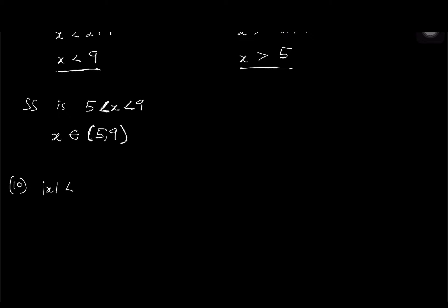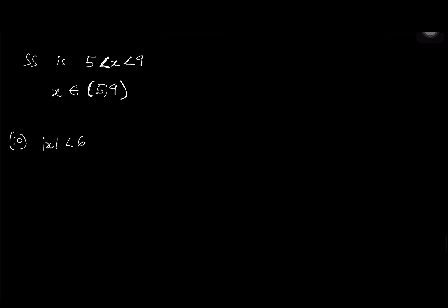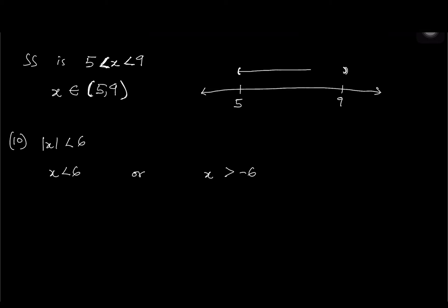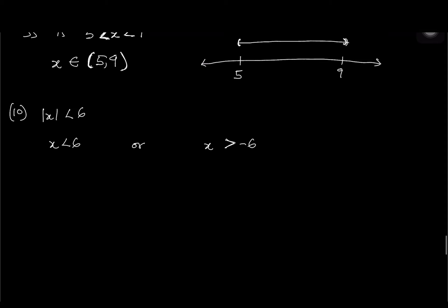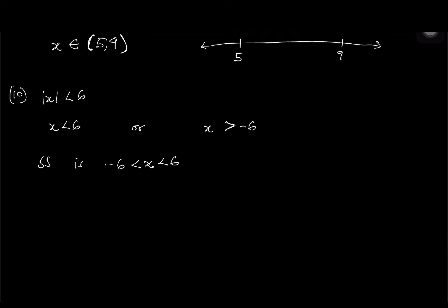Number 10: absolute of x less than 6. Two statements: x less than 6 or x greater than negative 6. The solution set is negative 6 less than x less than 6. In interval notation: x belonging to (negative 6, 6). On the number line: open circles at negative 6 and 6, connected with a line.